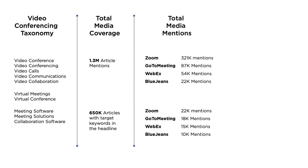From that data set, you're going to filter out keywords and phrases related to your business, your product, your competitors' businesses, and their products. In this example, Zoom had 321,000 mentions in the last three months. These are mentions within the context of the article — it could be at the top, in the middle, or at the very bottom — and we don't really know the context unless you do a deeper analysis of what they're saying.